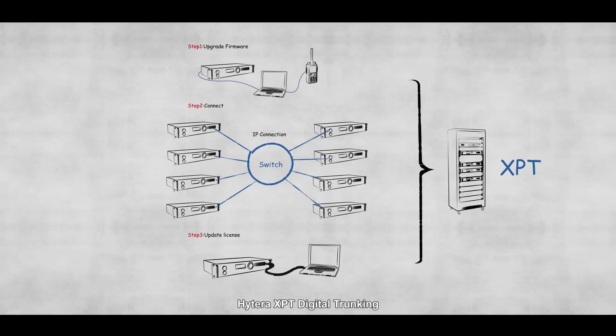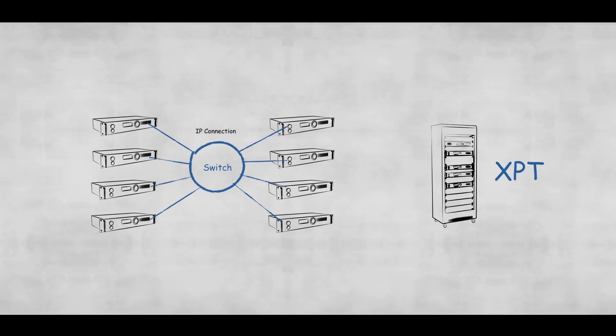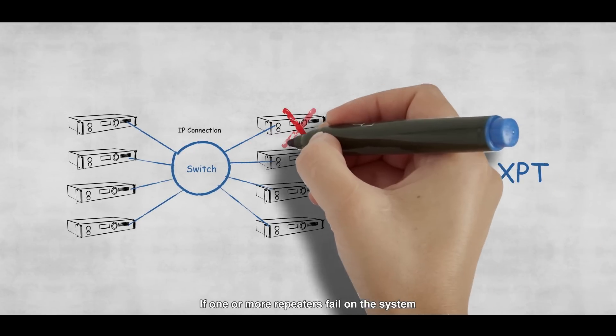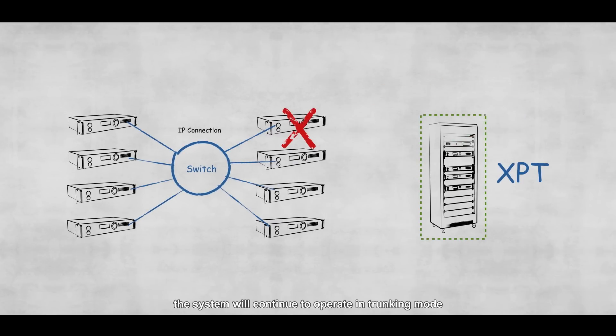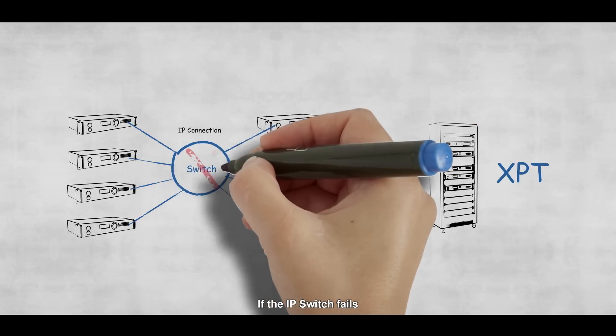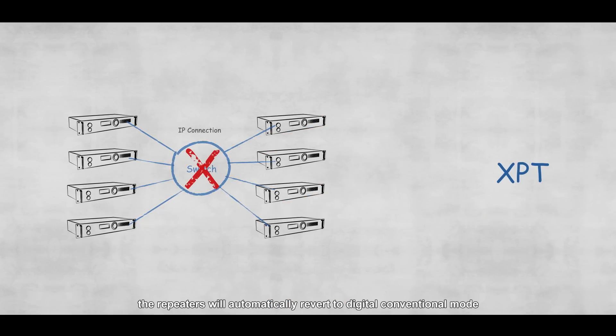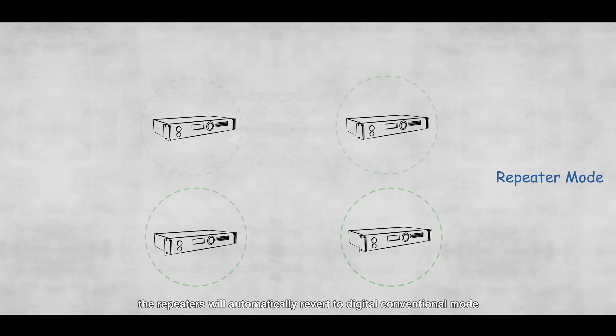Hytera XPT digital trunking supports two-level fail-safe control. If one or more repeaters fail on the system, the system will continue to operate in trunking mode. If the IP switch fails, the repeaters will automatically revert to digital conventional mode.